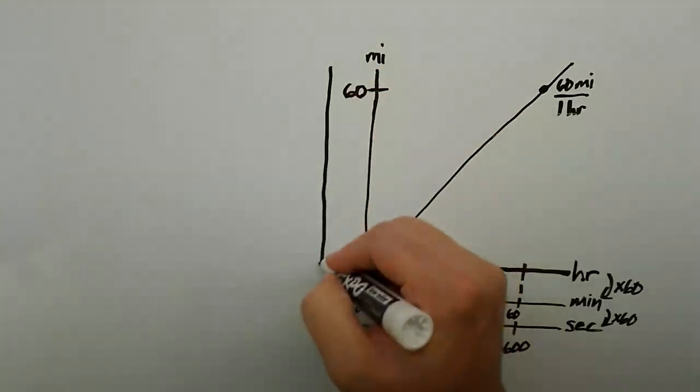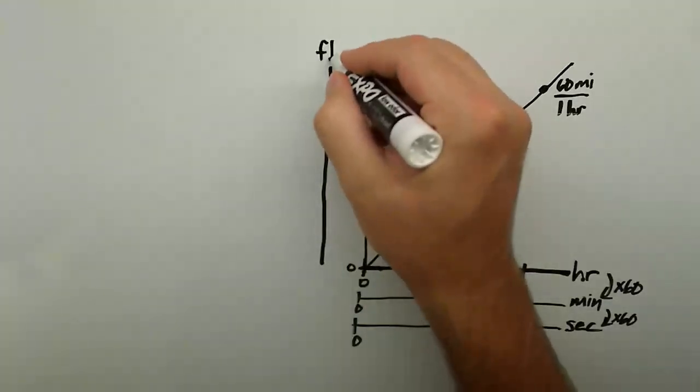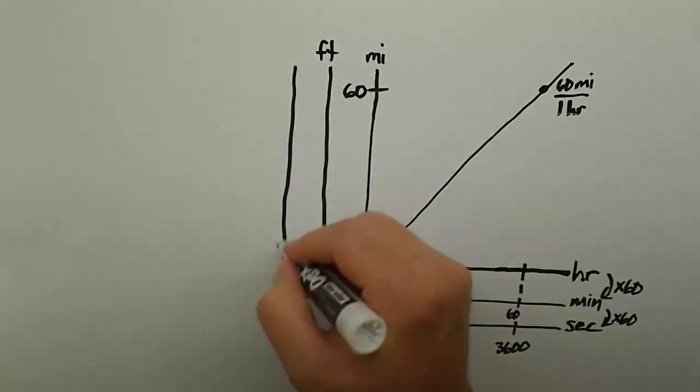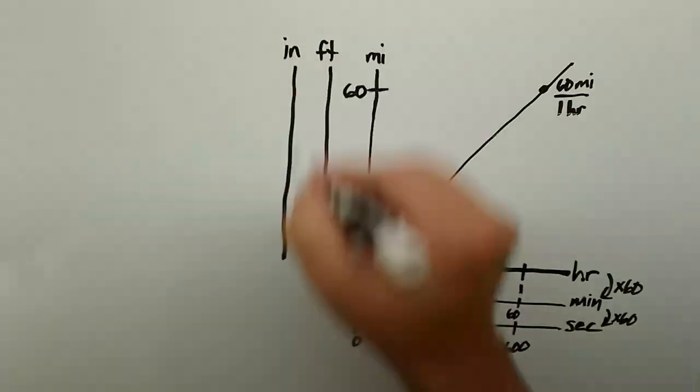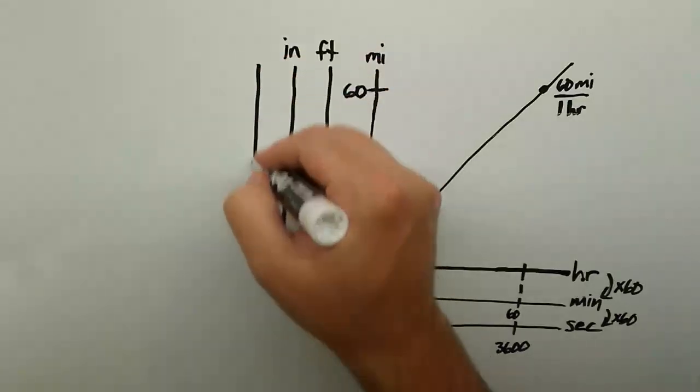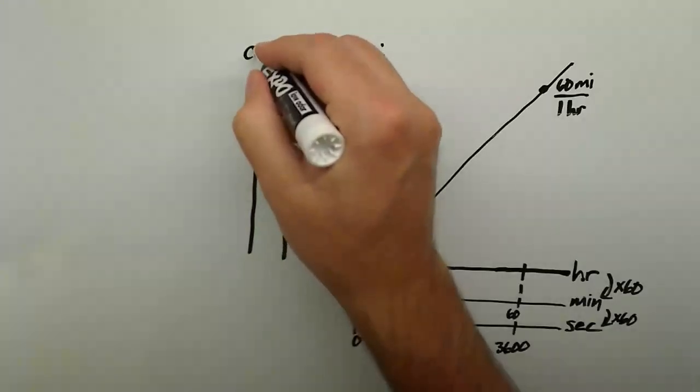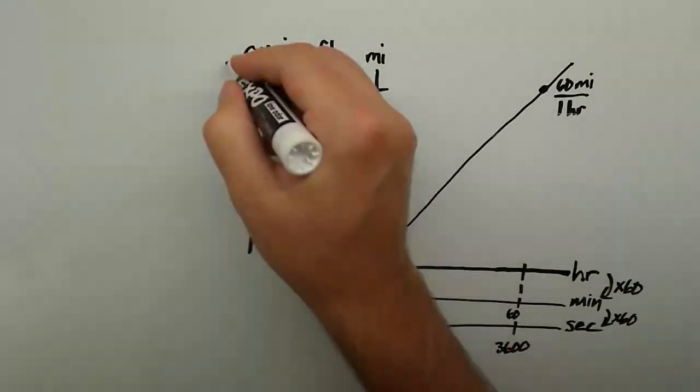Next, we'll create our number lines along the vertical axis for converting distance. Because the English to metric conversion I know best is inches to centimeters, we'll need to work from miles, to feet, to inches, to centimeters, and finally to meters.